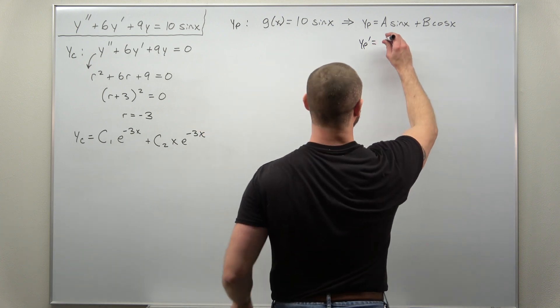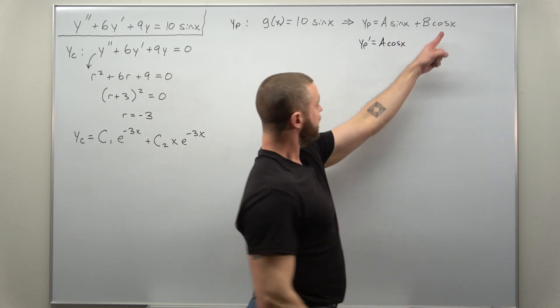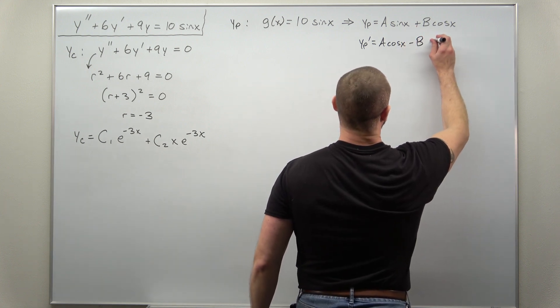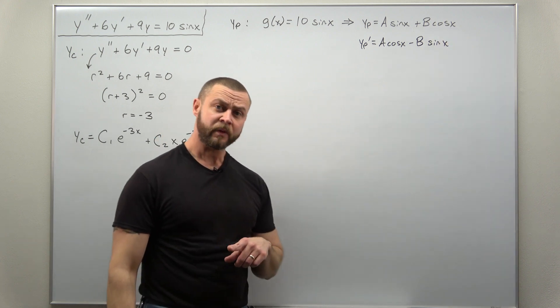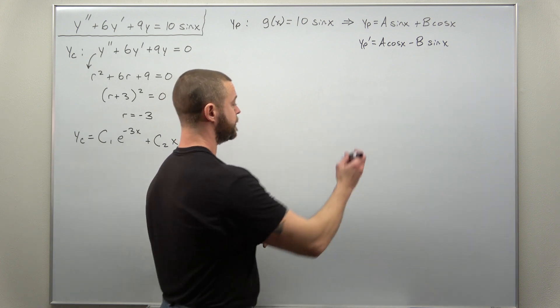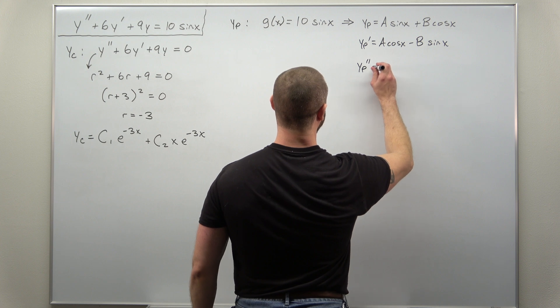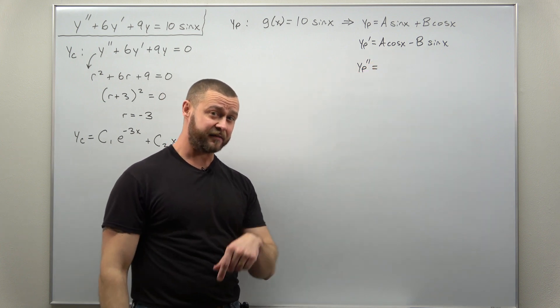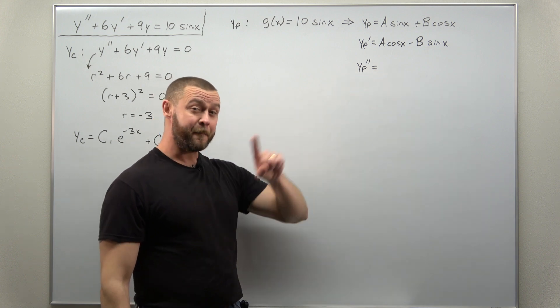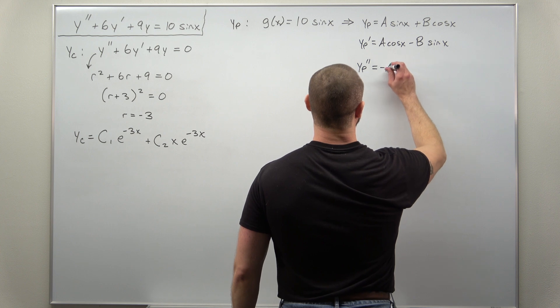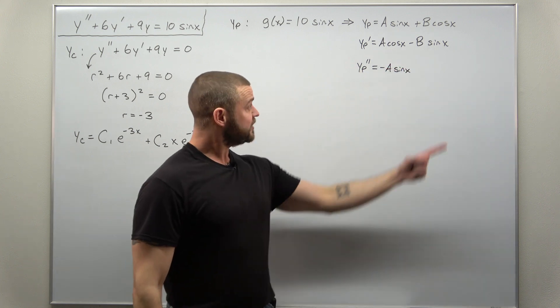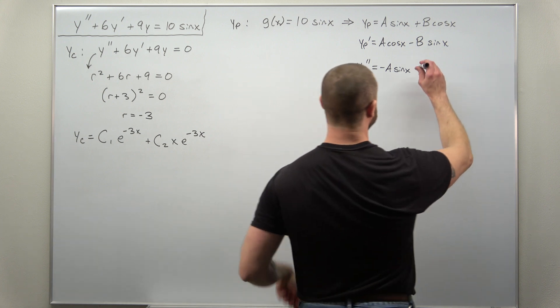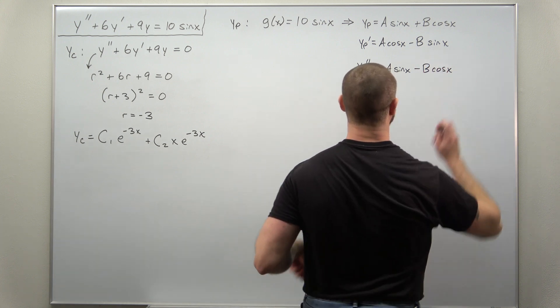Our first derivative here, sine is going to differentiate to cosine, and then cosine differentiates to negative sine. So we get a cosine of x minus b times sine of x. We need to differentiate that again to get the second derivative, y p double prime. Just be careful with your positive and negative signs. Cosine differentiates to negative sine of x, so this derivative gives us minus a sine of x. And when we differentiate the sine term, the derivative of sine is cosine with no extra negative, so we get minus b times cosine of x.